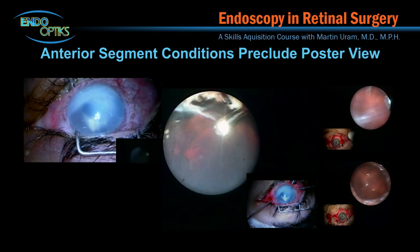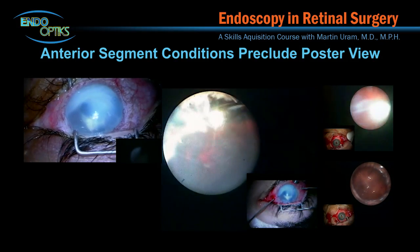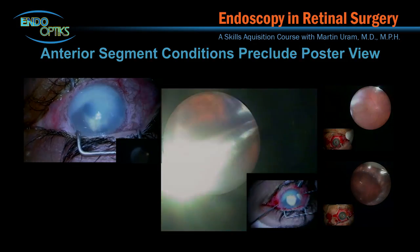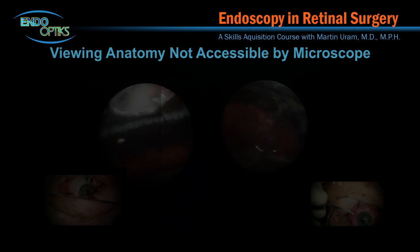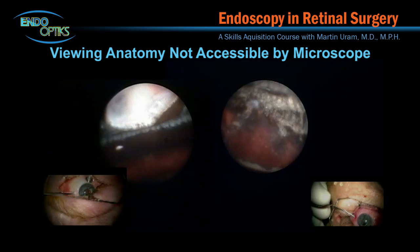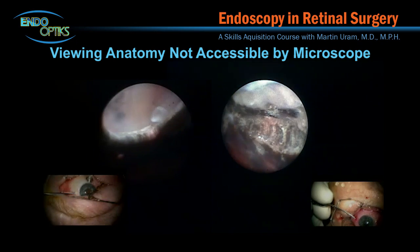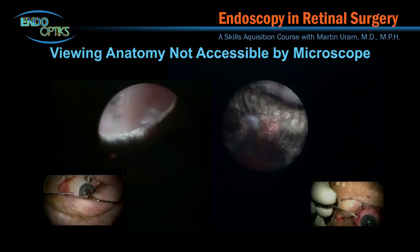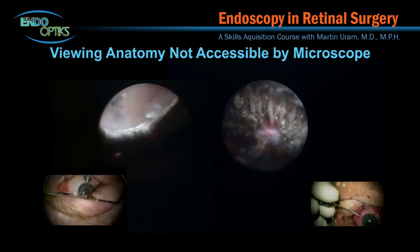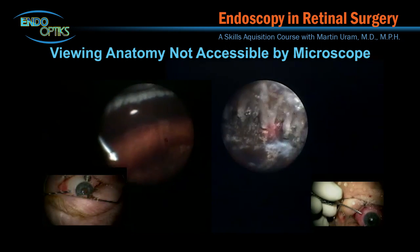These videos demonstrate that despite an opaque cornea or a miotic pupil, surgery may proceed unabated. In these examples, the peripheral retina, pars plana, ciliary body, and posterior iris regions are easily imaged with good resolution and wide field of view. This is not possible through the operating microscope.